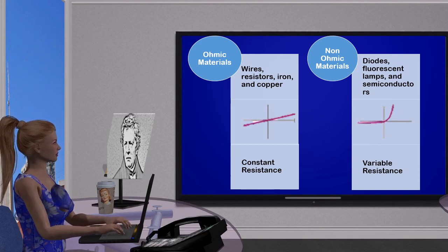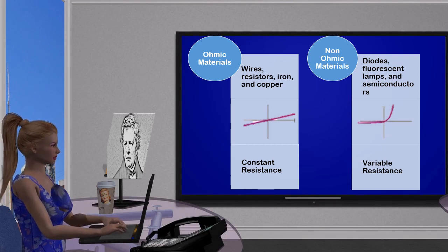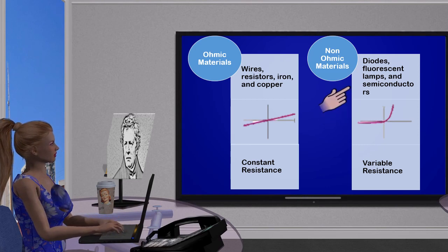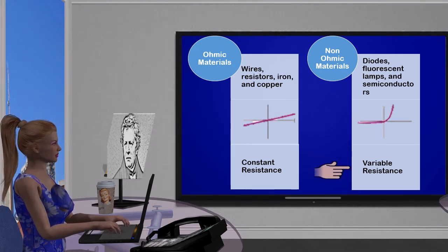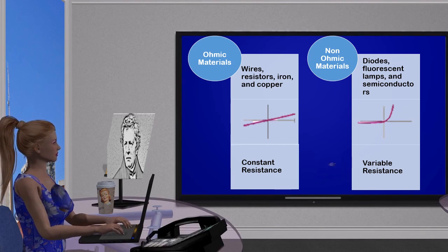Now let's discuss the properties of non-ohmic materials. Materials that do not obey Ohm's Law are called non-linear conductors or non-ohmic materials. The examples are diodes, fluorescent lamps, and semiconductors. Current-voltage or VI graph of these materials is a curved line. Non-ohmic materials do not have fixed resistance.